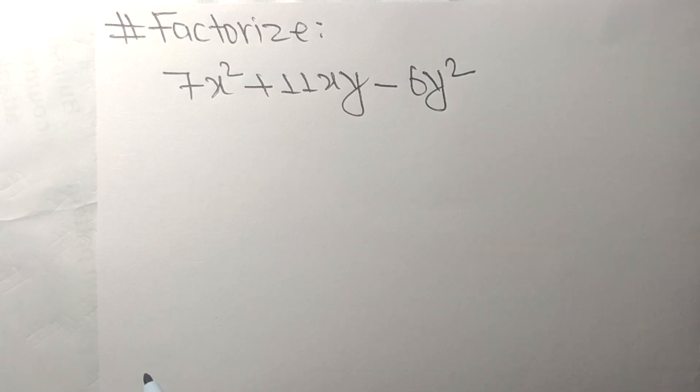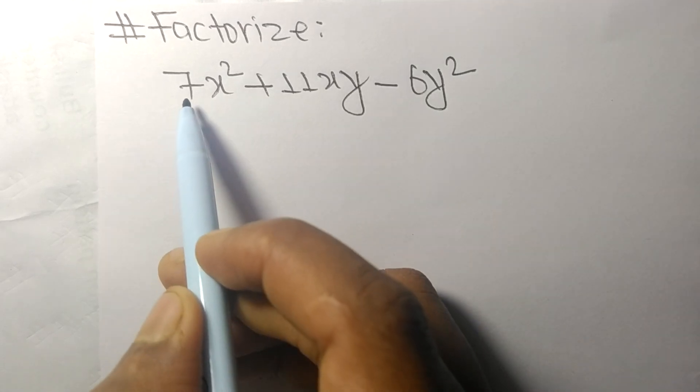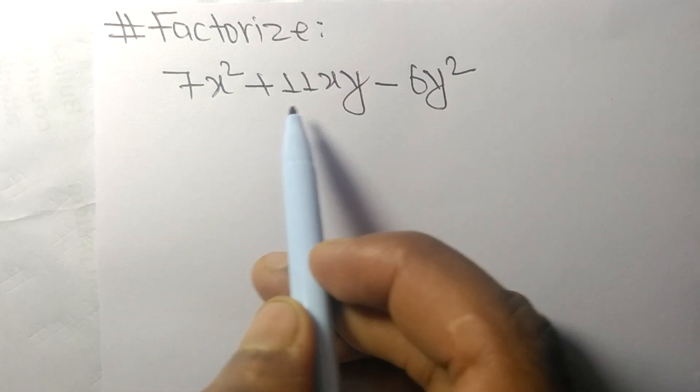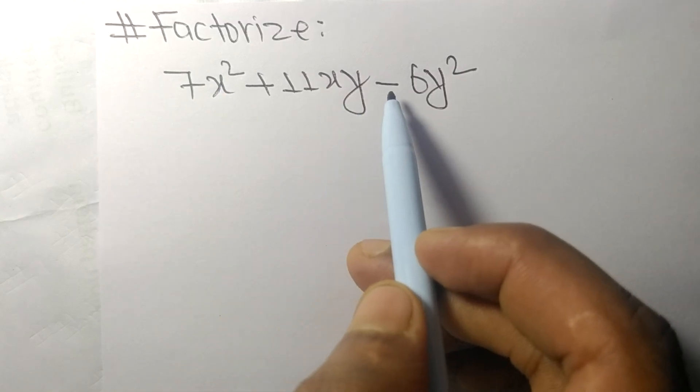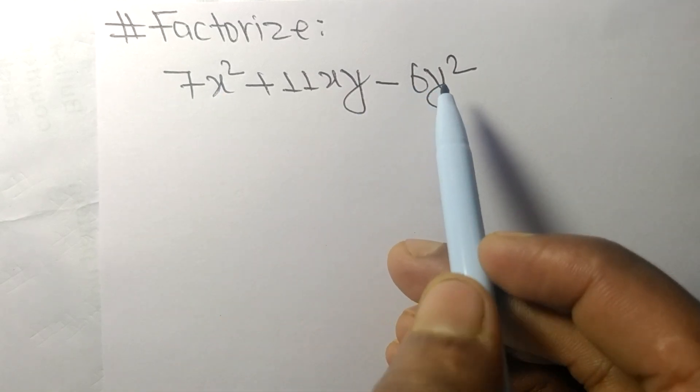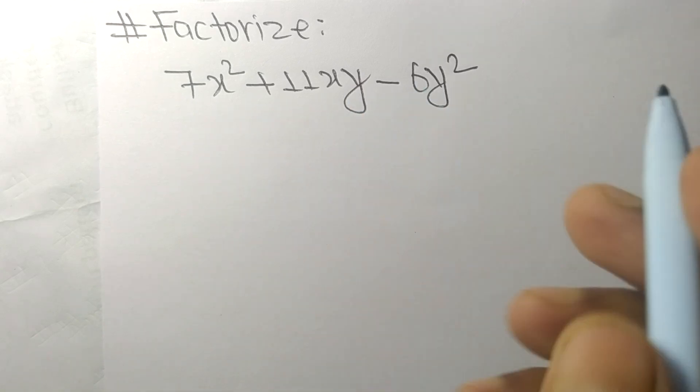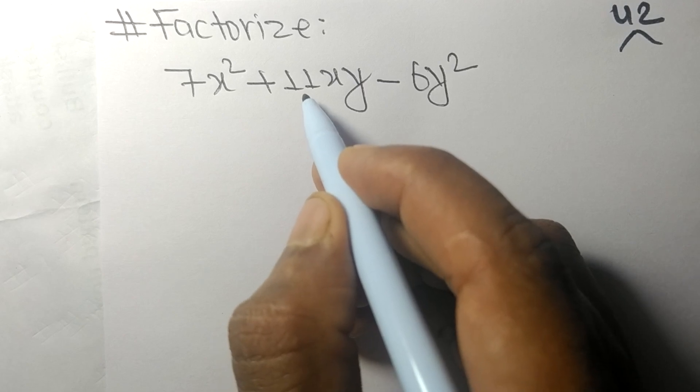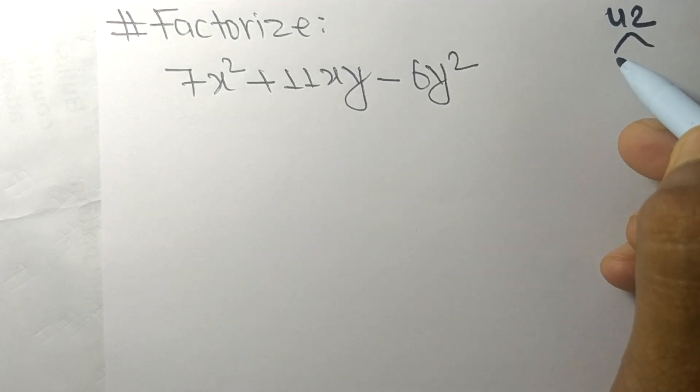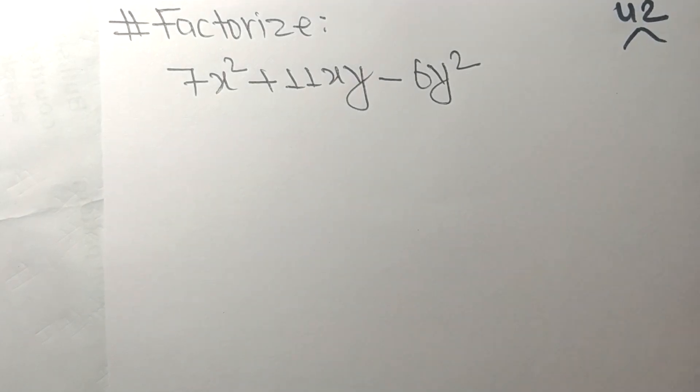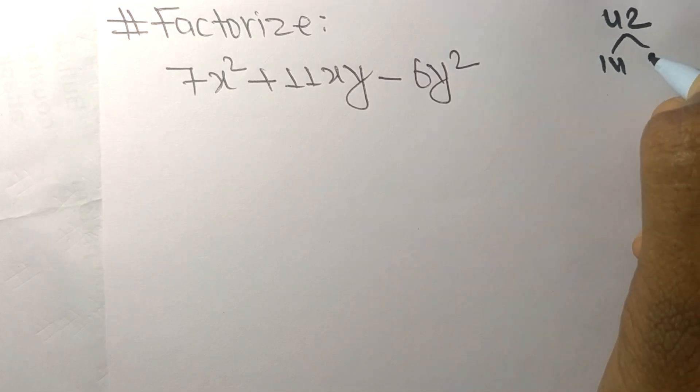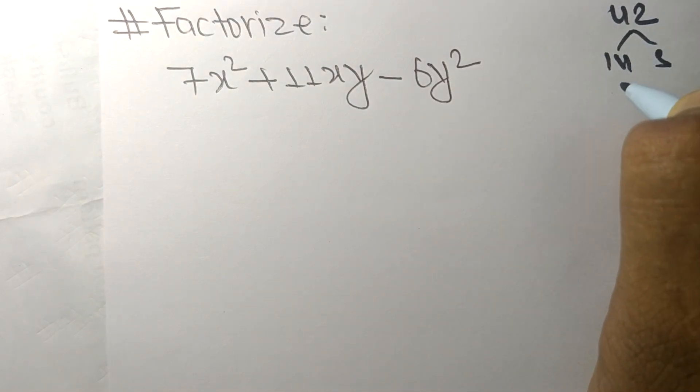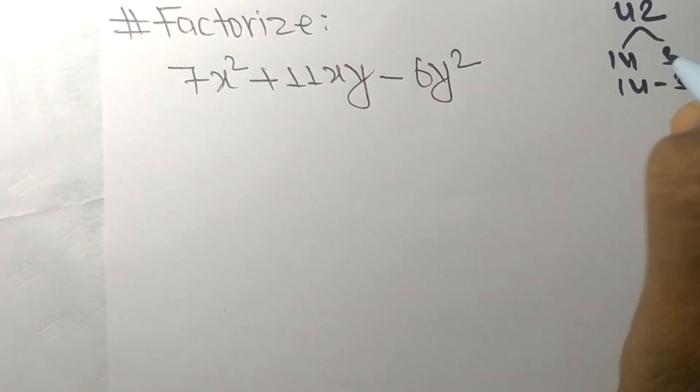Today in this video we shall factorize 7x² + 11xy - 6y². So, 7 times 6 means 42, and from this we need 11. That is, 14 times 3 means 42, and 14 minus 3 means 11.